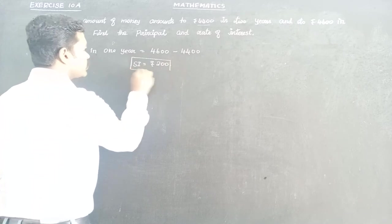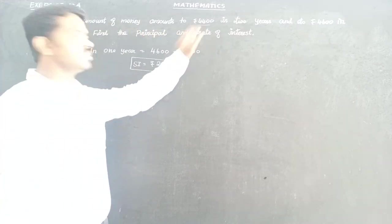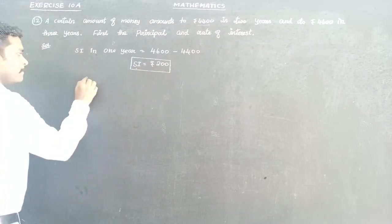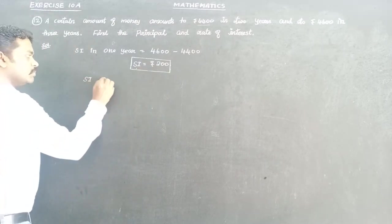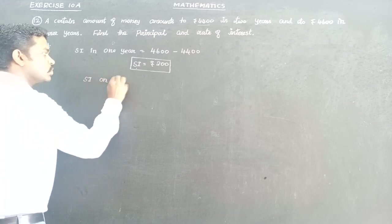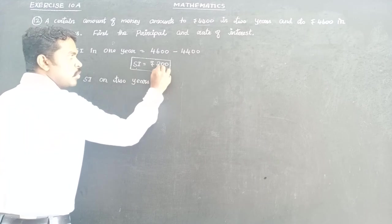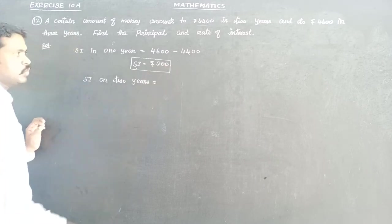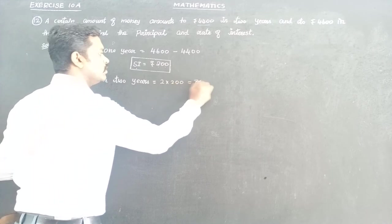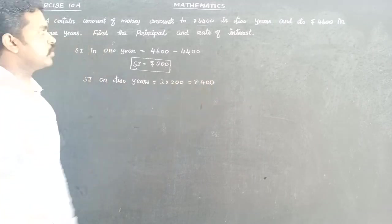Simple interest for one year is 200. The amount after two years is 4,400. So one year gives 200, meaning simple interest for two years equals 2 × 200, which is equal to rupees 400. So the simple interest for two years is 400.